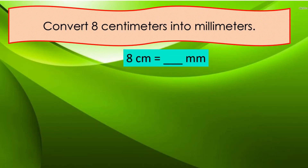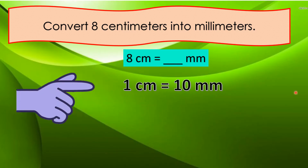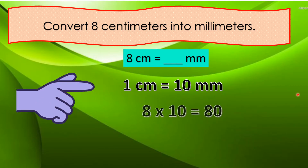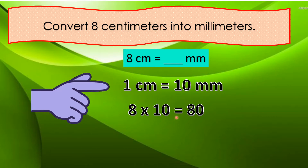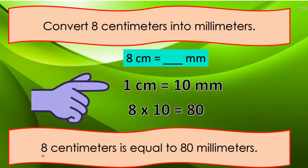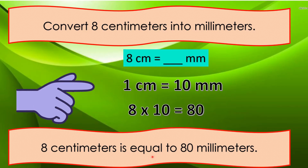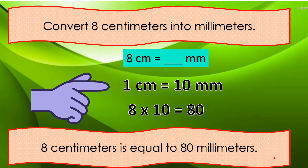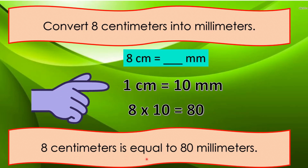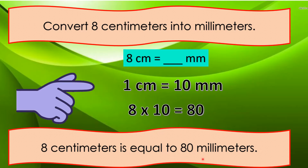Let's convert eight centimeters into millimeters — we're going to find out how many millimeters are there in eight centimeters. Remember that one centimeter is equal to ten millimeters. So eight centimeters times ten is equal to eighty. Eight centimeters is equal to eighty millimeters.